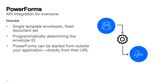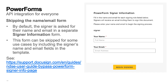Power Forms do have limitations. Power Forms are only created from a single template, and the envelope's document set is fixed per Power Form. It's difficult to programmatically determine the ID of the envelope created by the Power Form. And remember that Power Forms can be started from outside your application via their URLs. Depending on your use case, you may need to guarantee that the Power Form was started via your application. An HMAC can be used to enable validation of the data in the envelope that was set by your application. The Power Forms URL can also be obscured via a form, but doing so is not a guarantee that your application submitted the Power Form. By default, the signers are asked for their name and email in a separate signer information form when a Power Form is started. This form can be skipped for some use cases by including the signer's name and email fields in the template. See the documentation link for more information.